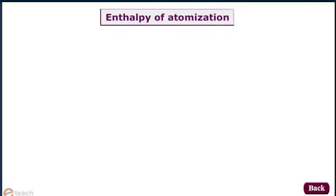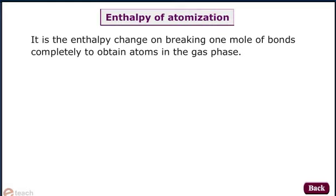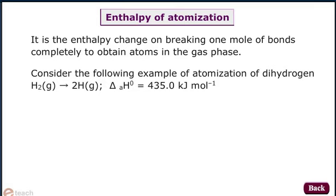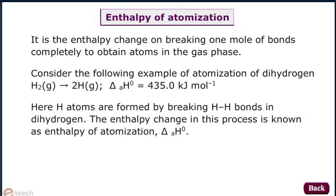Let us now understand Enthalpy of Atomization. It is the enthalpy change on breaking 1 mole of bonds completely to obtain atoms in the gas phase. Consider the following example of atomization of dihydrogen: H₂ gas giving 2 H atoms in the gas phase. Delta H° atomization equals 435.0 kJ per mole.